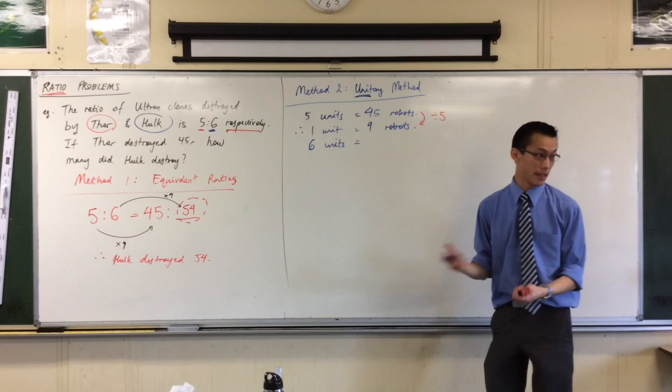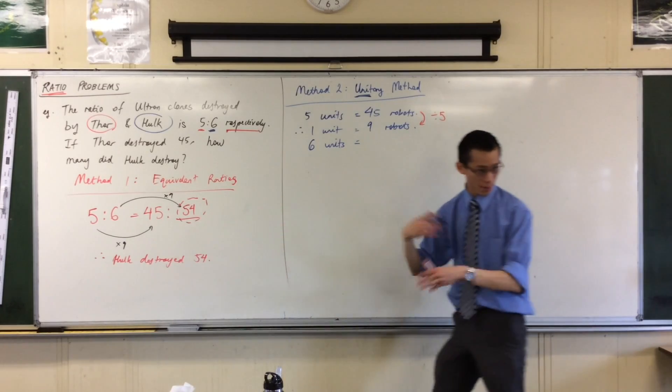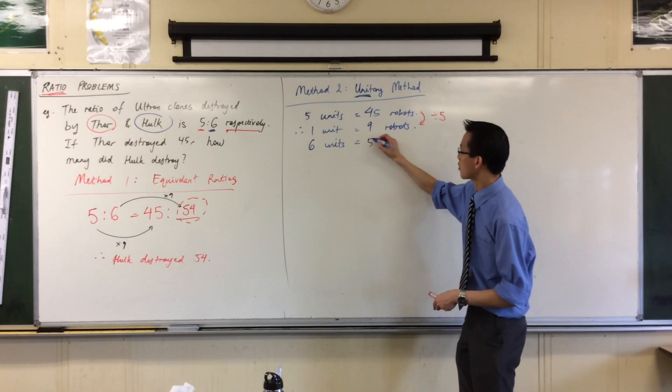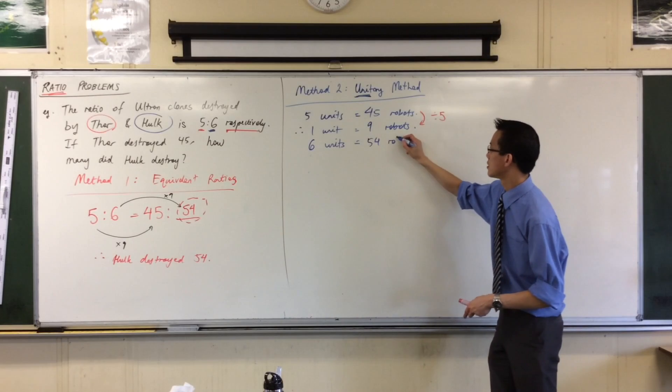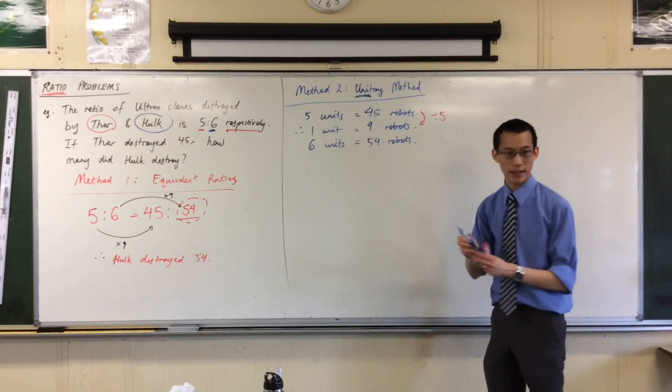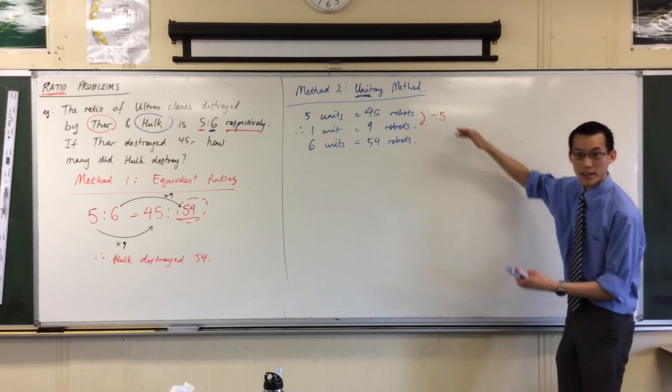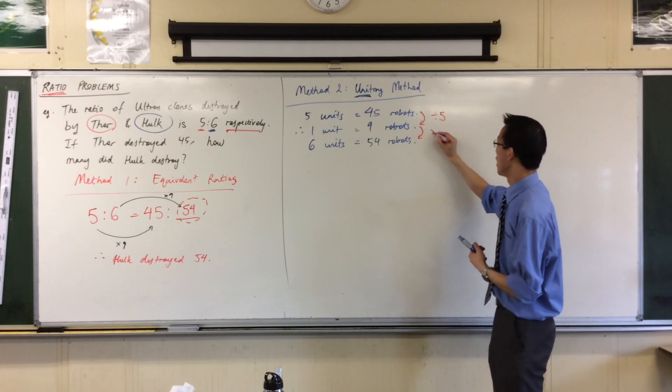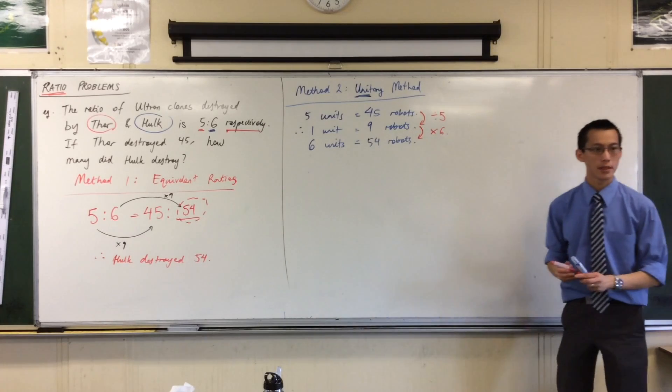So I'm going to take that number. I mean, this is exactly what I did before, right? Just dressed up slightly differently. And I will multiply it by six. So you can see from this line to this line, you divide it. And then from this line to this line, I multiply it.